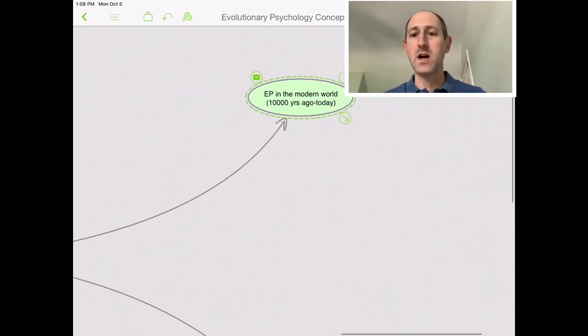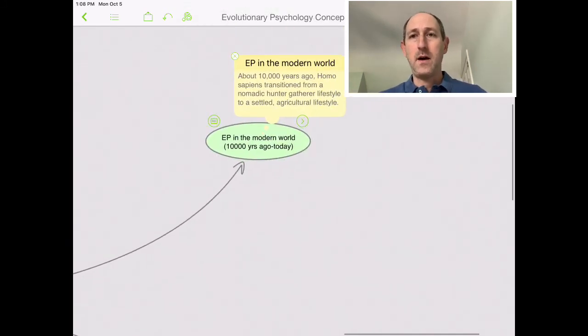First, let's talk about evolutionary psychology in the modern world. Roughly 10,000 years ago, Homo sapiens transitioned from a nomadic hunter-gatherer lifestyle to a settled agricultural lifestyle. This happened in various places throughout the world, roughly around the same time. In some places it didn't happen, which is why we still have hunter-gatherer cultures even today. But it happened in enough places that it led to a real big change in the way that humans live and interact with one another.